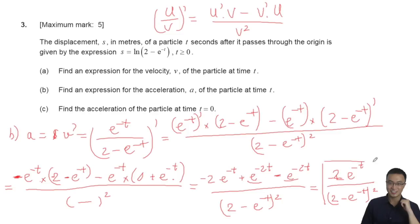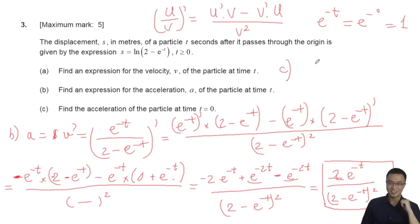For part c, find the acceleration at t = 0. When t = 0, e^(-t) = e^0 = 1, because any number to the power of zero equals one. Substituting t = 0 into the acceleration formula: numerator is minus 2 times 1, denominator is (2 minus 1) squared = 1. The final result for part c is acceleration = minus 2.